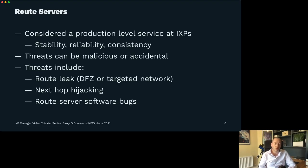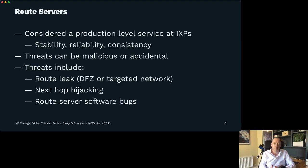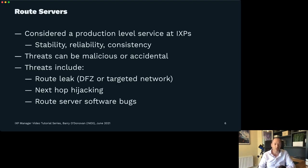What your exchange is providing is a way for one member to advertise their route and have that route sent to every other member. If that route is bad — whether maliciously or not — you're going to propagate that to all of your other members. So as an exchange, you have a huge responsibility to configure your route servers correctly. Threats can be malicious or accidental, but the vast majority — 99-plus percent — are purely mistakes: a fat finger or a poor network operator who's advertised a default route or caused a route leak.